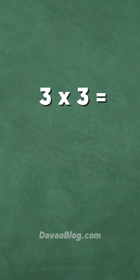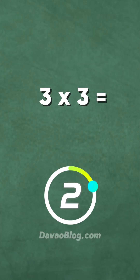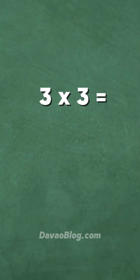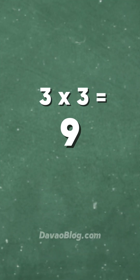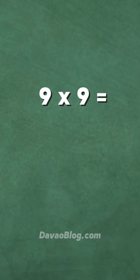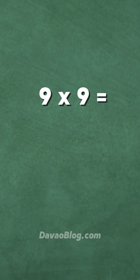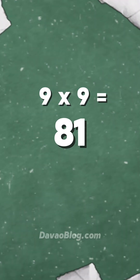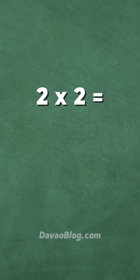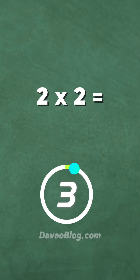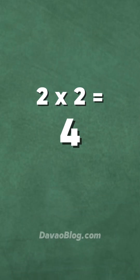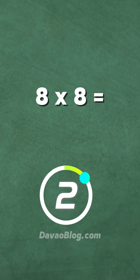3 times 3 is equal to... 9. 9 times 9 is equal to... 81. 2 times 2 is equal to... 4. 8 times 8 is equal to... 64.